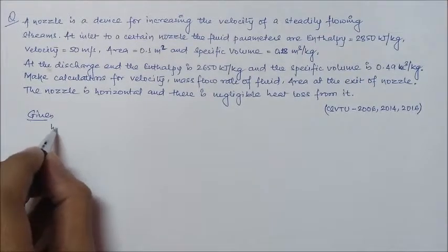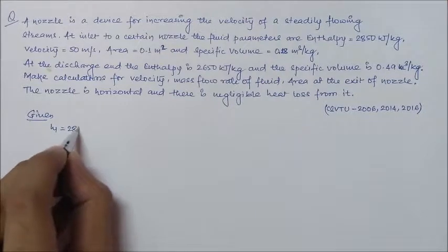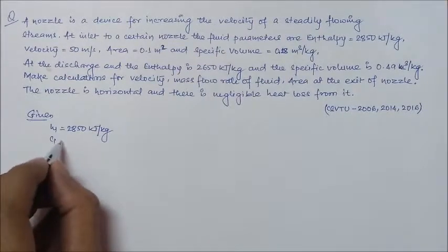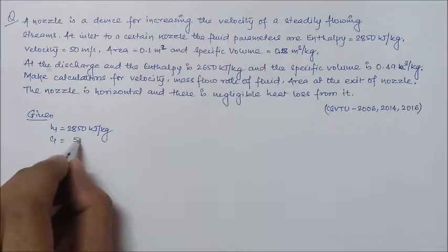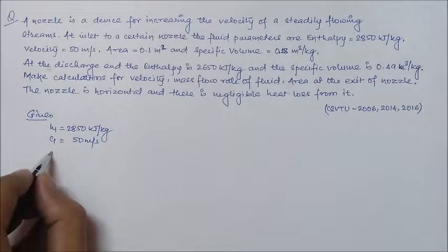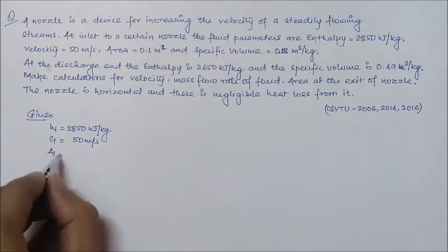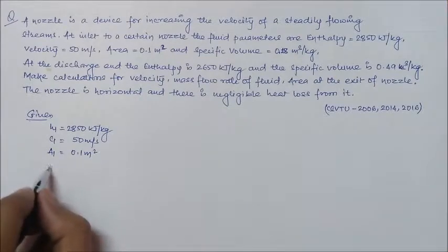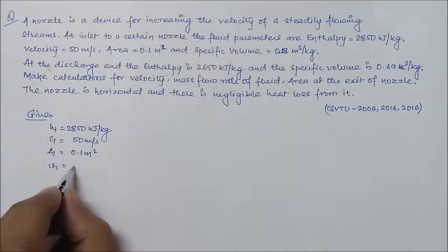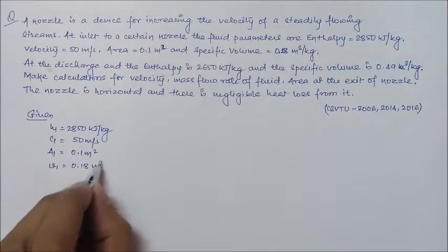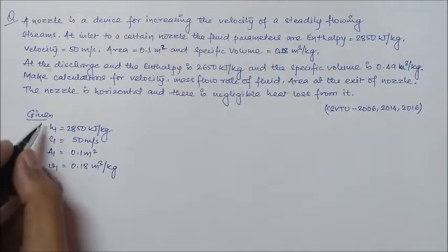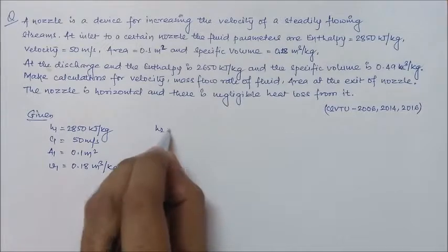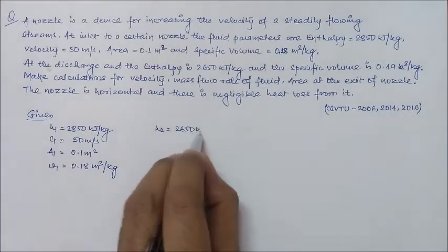Given, we have H1 equal to 2850 kJ per kg, C1 as 50 meter per second, cross-sectional area at the inlet A1 as 0.1 meter square, and specific volume V1 at the inlet as 0.18 meter cube per kg.